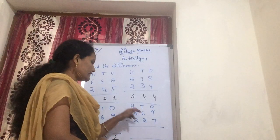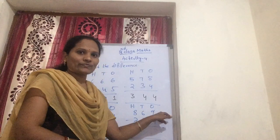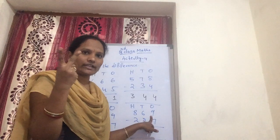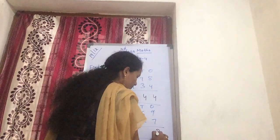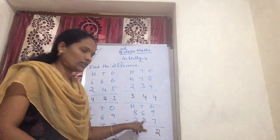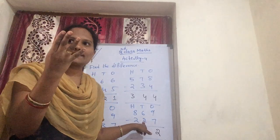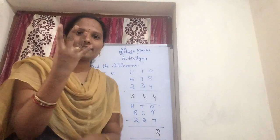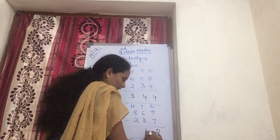Now coming to this problem: 6169 minus 227. This is also 9 minus 7 — count after 7: 8, 9 — you are getting how many? 2. That is written in the answer. Now coming to tens — 6 minus 2. Count after 2: 3, 4, 5, 6. Get how many fingers? 4 fingers. Write 4 in tens.